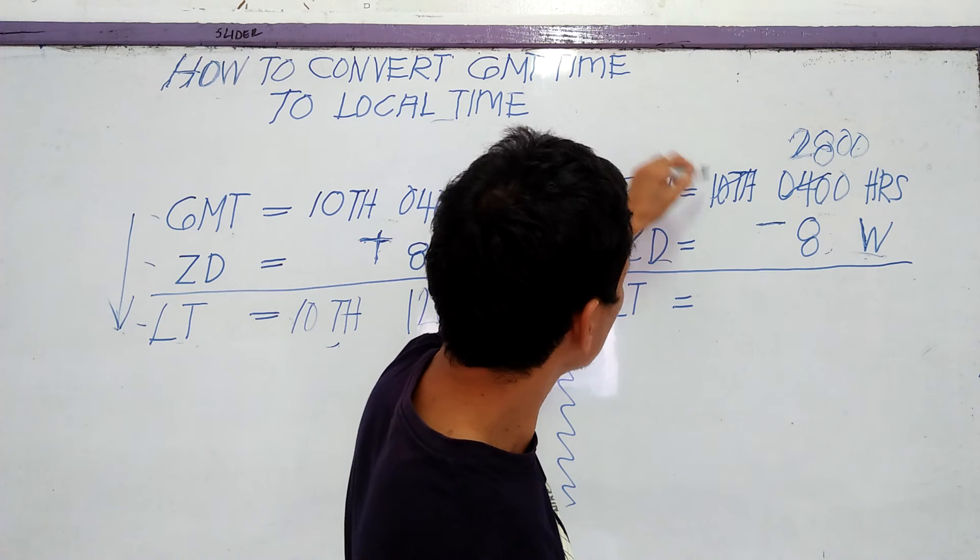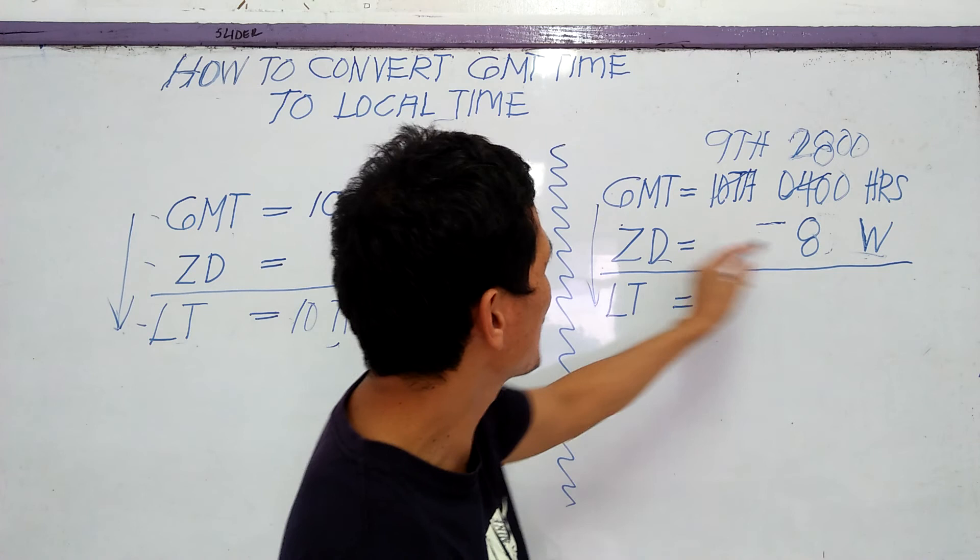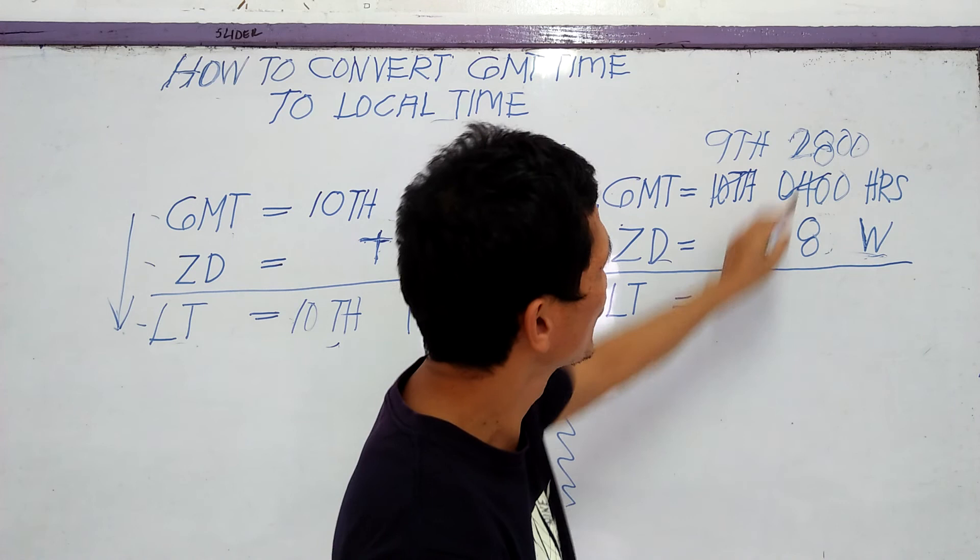GMT to local time, west longitude is subtract. 28 minus 8.